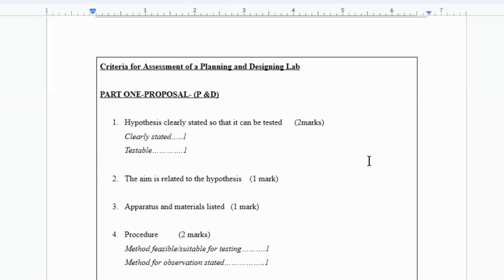Number three, you get a mark for just listing all the materials and apparatus that you would think would be needed to carry out this plan that you have in your mind that you are now putting on paper.